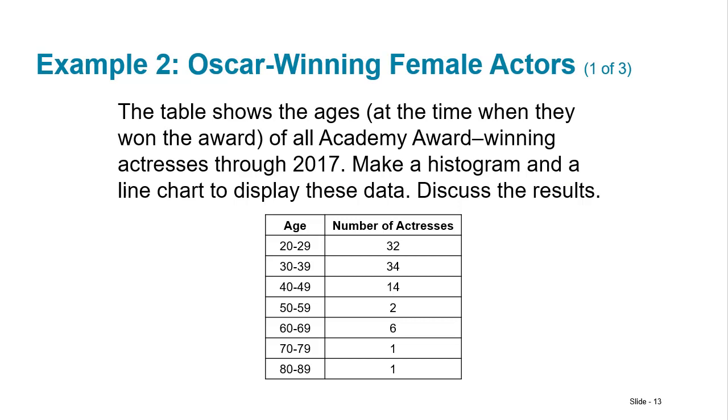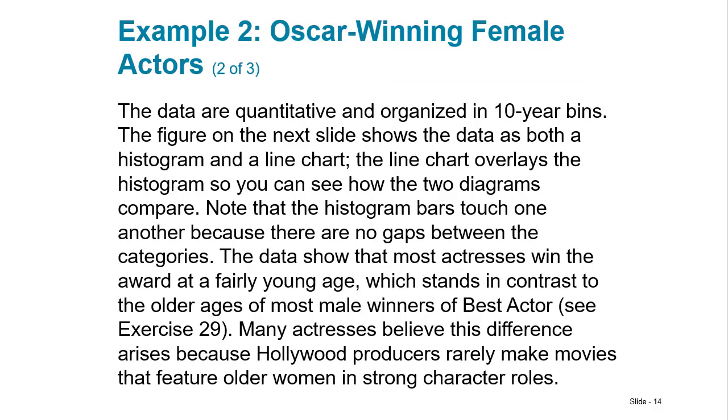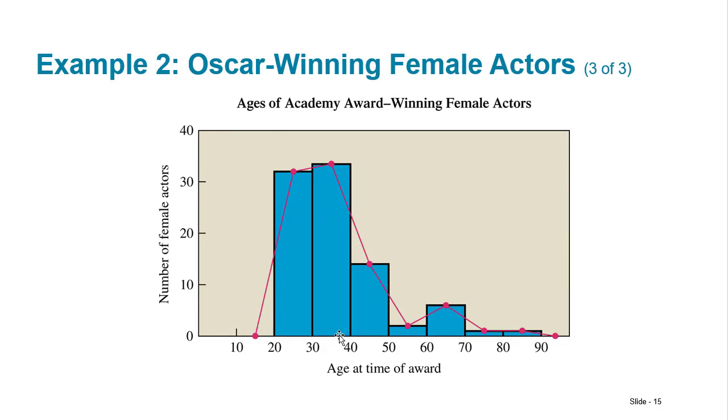So how about this where we've got a table that shows the ages at the time when they won the award of all Academy Award winning actresses through 2017. We can make a histogram and a line chart to display these data. So we have basically we put them in decades. So women who won the award in their 20s versus their 30s and so on and so forth. So the data are quantitative and they're organized in 10 year bins. So we know that we want to make a simple histogram with each bin being that 10 year span.